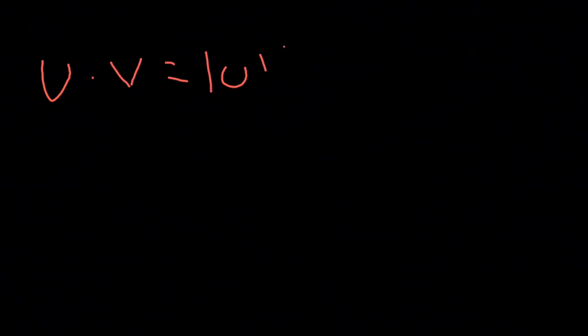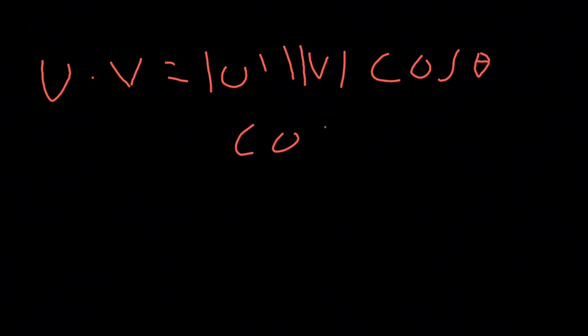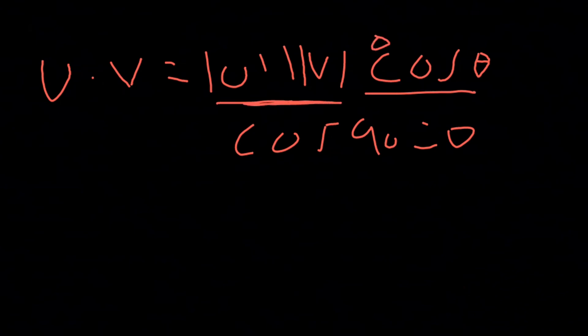The dot product formula: u dot v equals norm of u times norm of v times cosine theta. Since theta is 90 degrees, cosine of 90 degrees equals zero. So no matter what the magnitudes are, the dot product is zero because cosine of 90 degrees is zero.